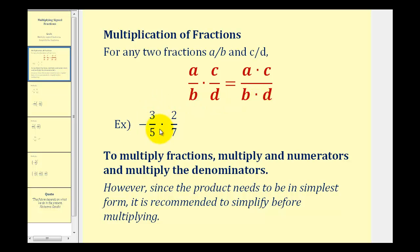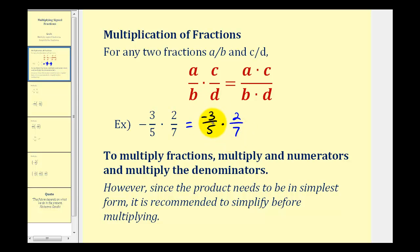So if we have negative three-fifths times two-sevenths, the first thing I prefer to do is to move the negative sign up into the numerator. So write this as negative three over five times two over seven. Having the negatives in the numerator makes it easier to keep track of the negative signs. The product will have a numerator of negative three times two, that's negative six, and a denominator of five times seven, which is equal to thirty-five. This would be our product.